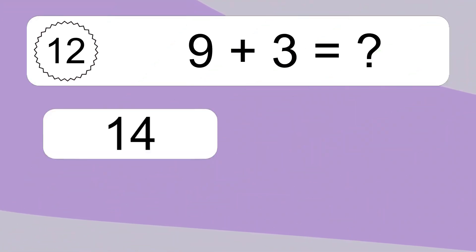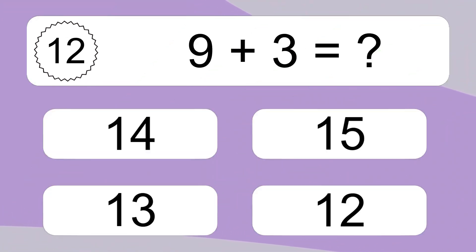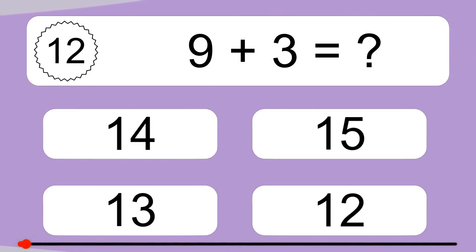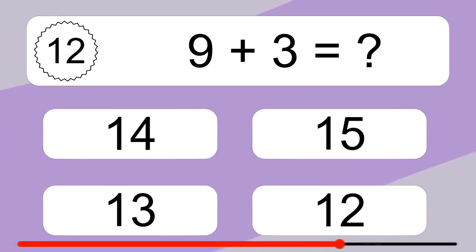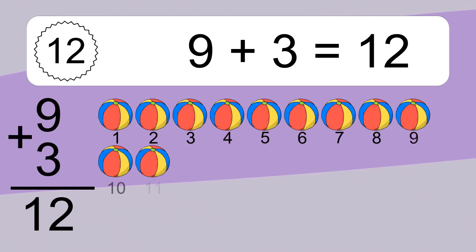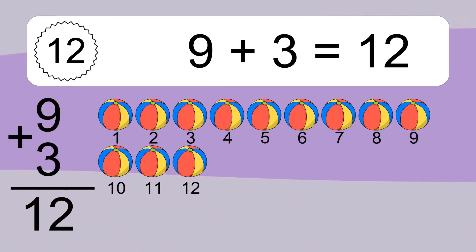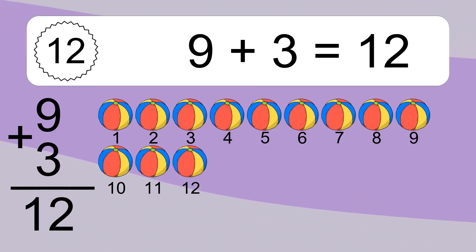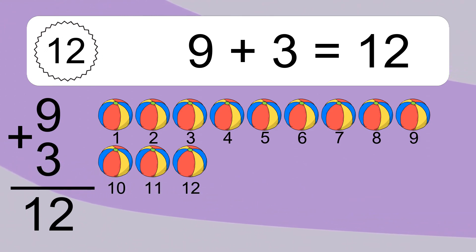9 plus 3 equals what? 9 plus 3 equals 12. Let's count it. 1, 2, 3, 4, 5, 6, 7, 8, 9, 10, 11, 12.